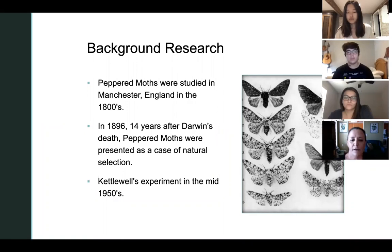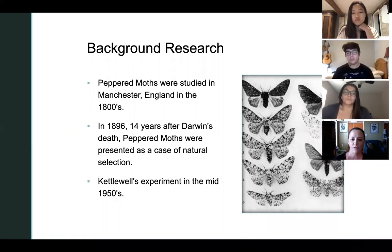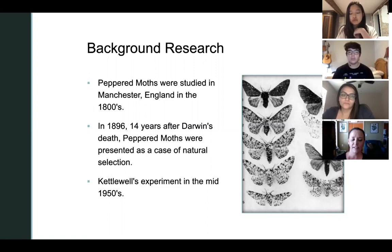The dark colored carbonaria peppered moth was not known before 1811. After field collection in 1848 from Manchester, an industrial city in England, the frequency of the variety was found to have increased drastically. By the end of the 19th century it almost completely outnumbered the original light colored typical moths, with a record of 98% in 1895. It was 14 years after Darwin's death in 1896 that J.W. Tutt presented it as a case of natural selection, causing the idea to spread widely.